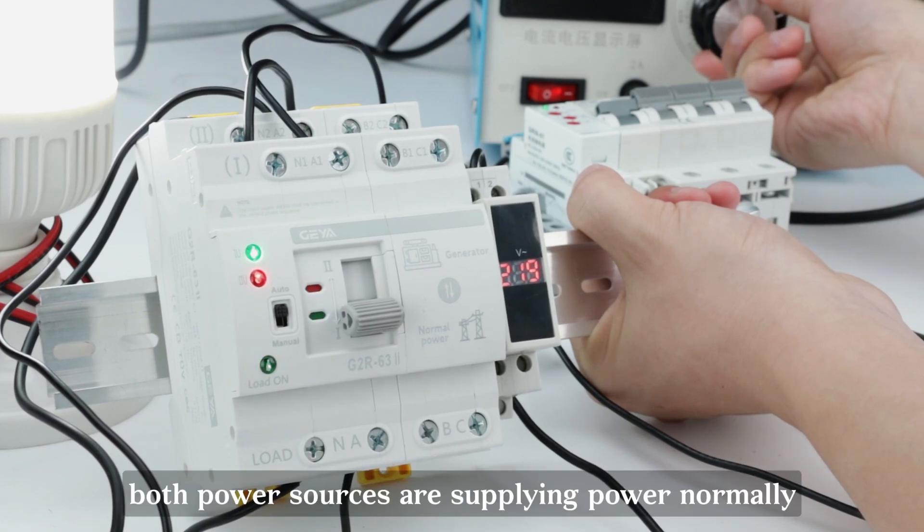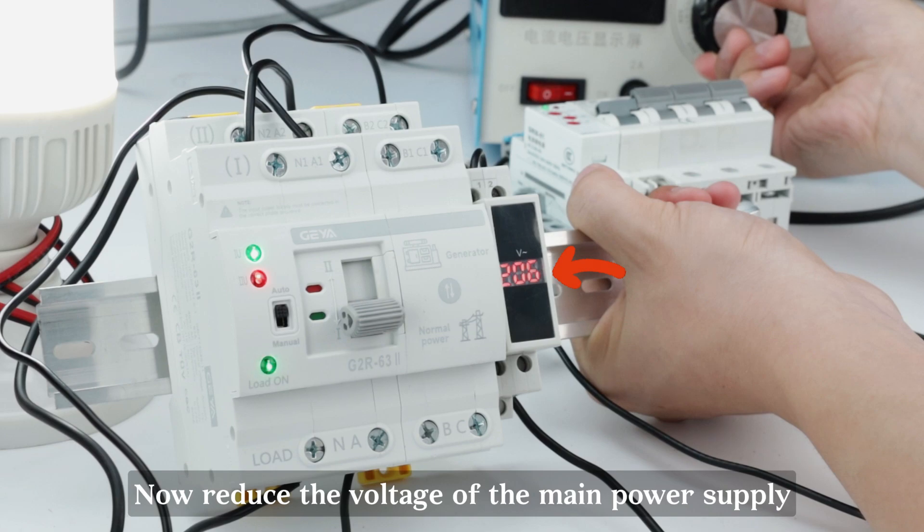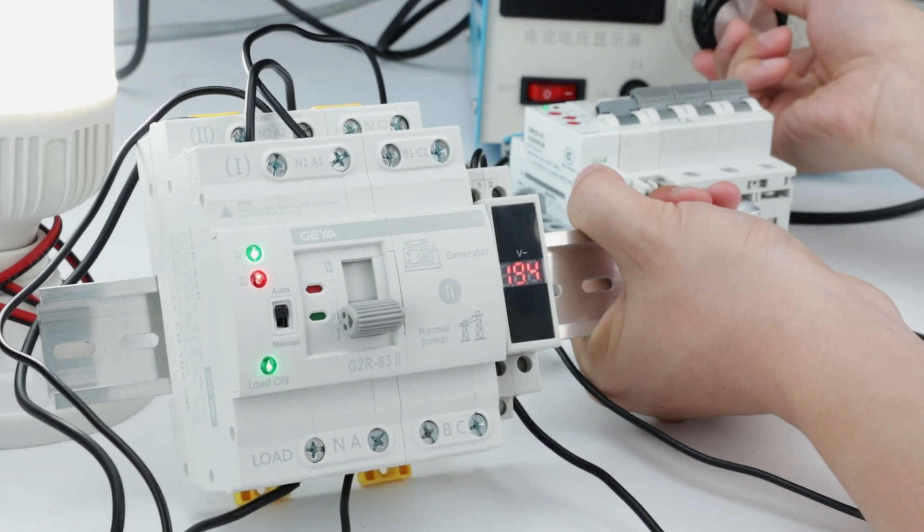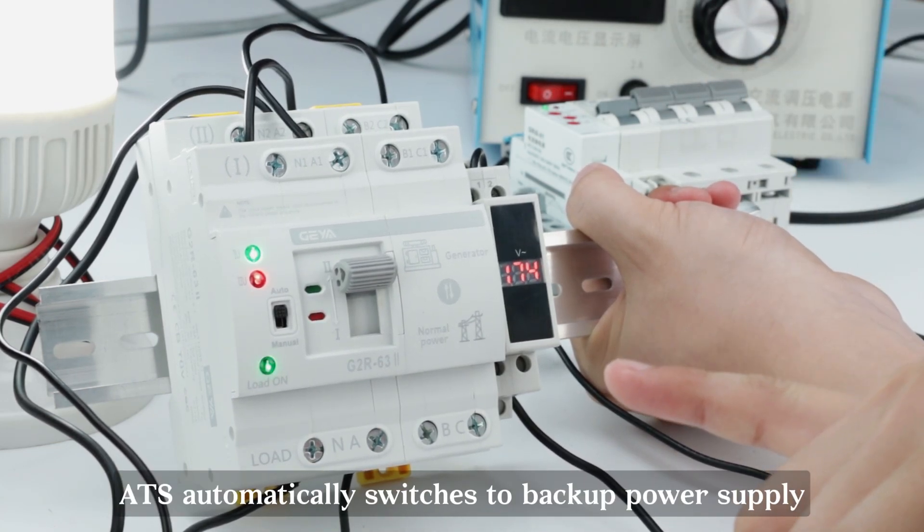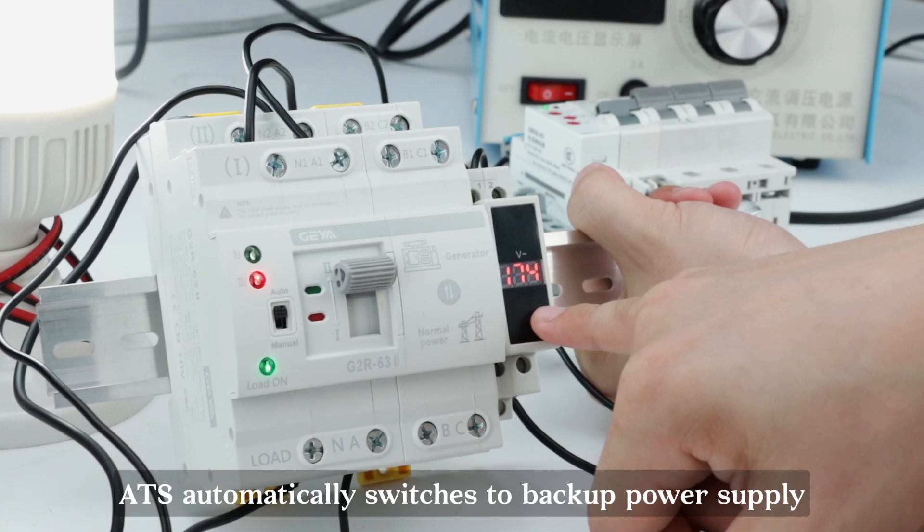At this time, both power sources are supplying power normally. Now reduce the voltage of the main power supply. When the voltage drops below 175V, ATS automatically switches to backup power supply.